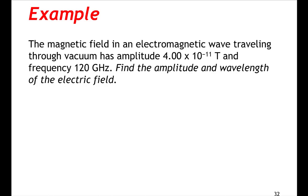The magnetic field in an electromagnetic wave traveling through vacuum has an amplitude of 4.00 times 10 to the minus 11 Tesla and a frequency of 120 gigahertz. Find the amplitude and wavelength of the electric field.